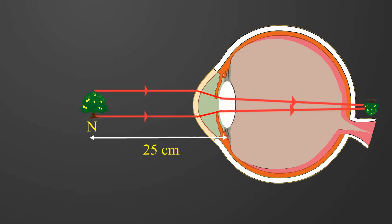So this kind of defect is known as hypermetropia or long-sightedness. For these people, the near point is not equal to 25 cm. For a healthy eye it is 25 cm, but for these people it will be greater than 25 cm.